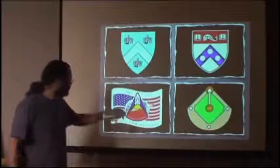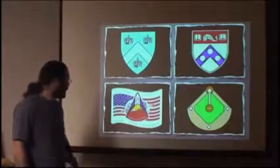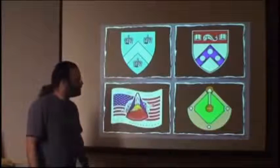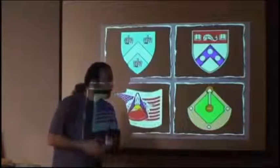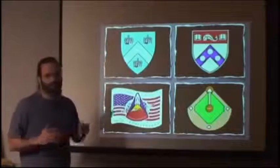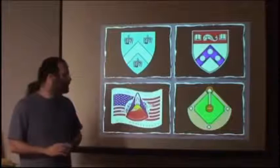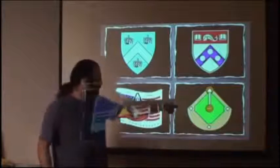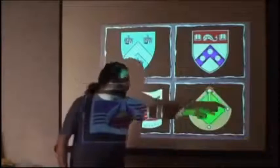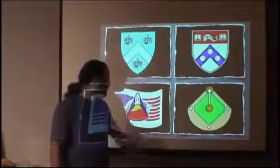Here we see the compasses tracing a semicircle on the patch for the Columbia space shuttle mission. And one of my favorites encoding the compass and square of Freemasonry is the game of baseball. We see the compasses encoded by the foul lines that make up first and third base.